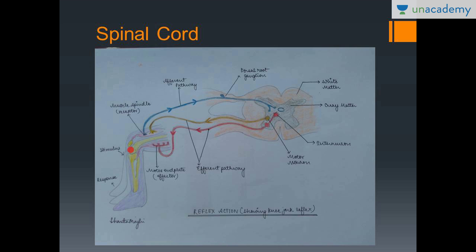The information from the motor neuron is then carried to the muscle, telling it to contract. This entire pathway is known as a reflex arc. In this reflex arc, there is only a single synapse, so this is known as a monosynaptic reflex.